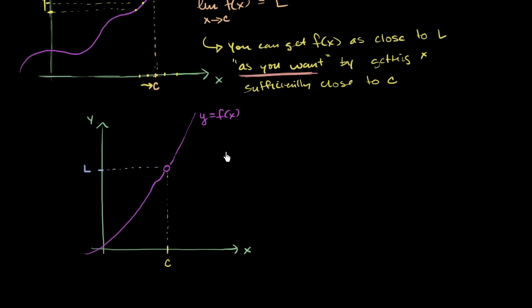then if this limit is actually true, if the limit of f of x as x approaches c really is equal to L, then they should be able to find a range around c that if x is around that range, your f of x is going to be in the range that you want.